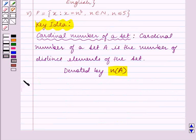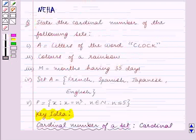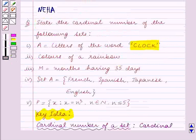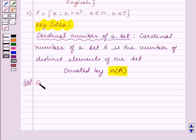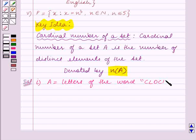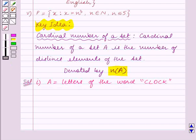Let's start the solution now. In Part 1, we are given set A is equal to letters of the word clock. We have to find the cardinal number of set A. Using the key idea, the cardinal number of set A is the number of distinct elements of the set.